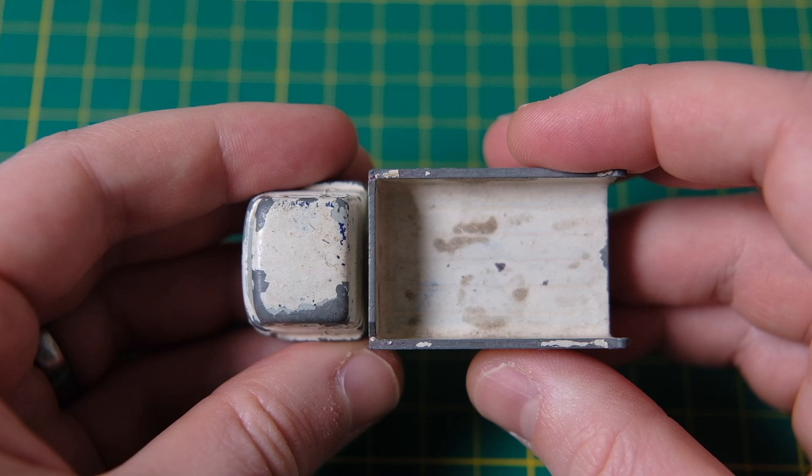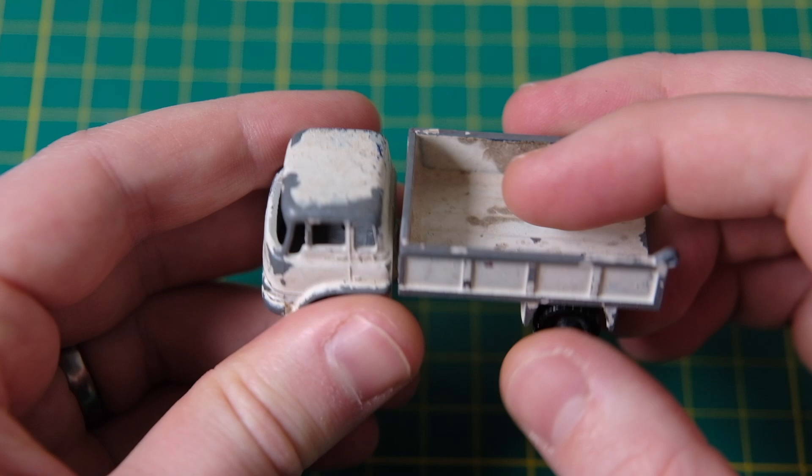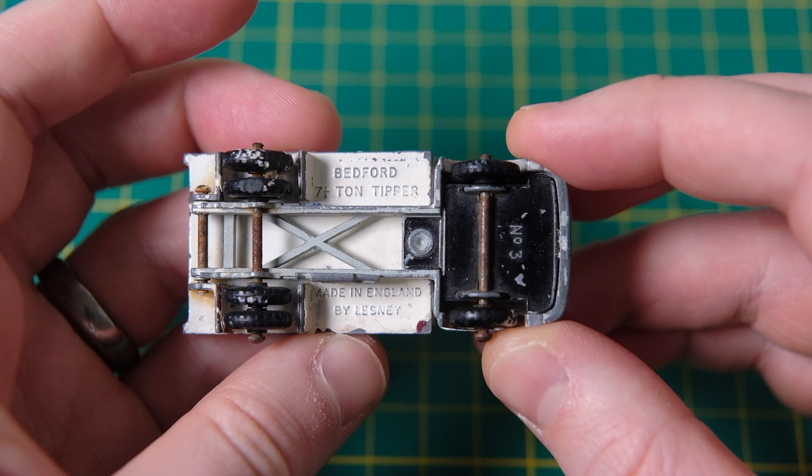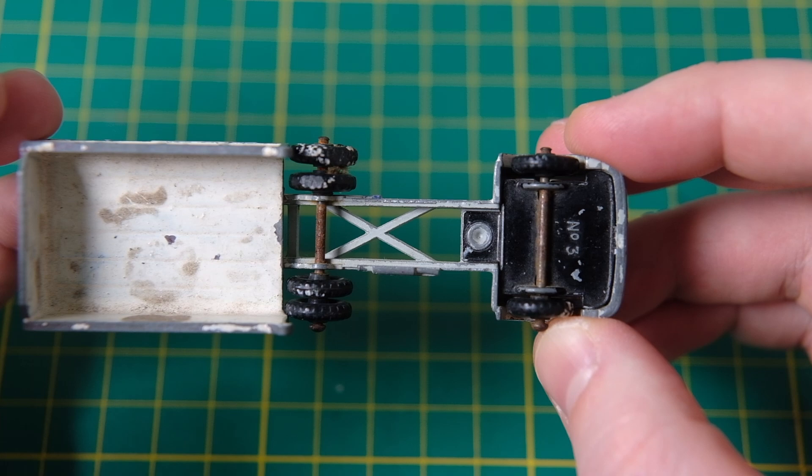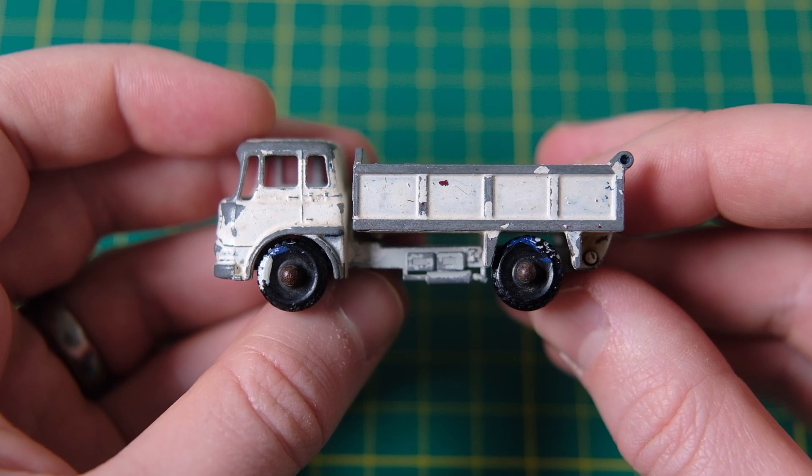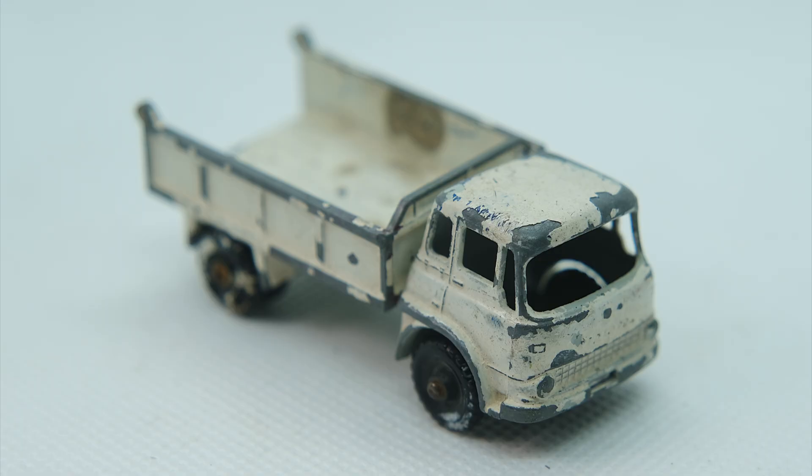Usually they would have a grey cab and a tipper in maroon in varying shades, though these were a dark red by the time production ended. Mine here has been sloppily repainted in white that has discoloured over the years. It is missing the tipper tailgate while the axles and tipper hinge are rusty.